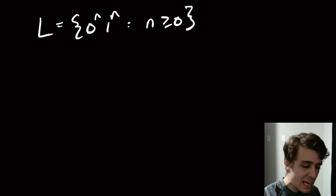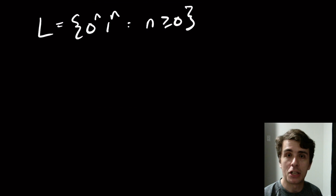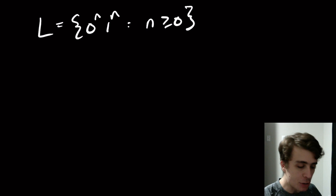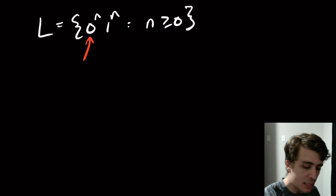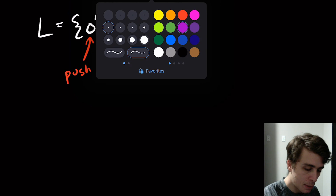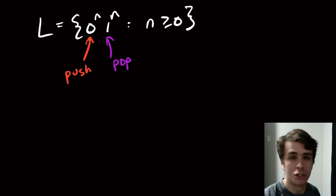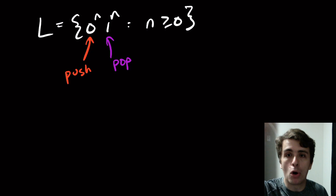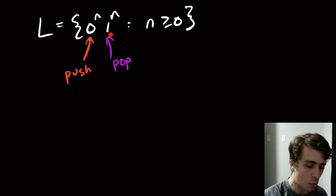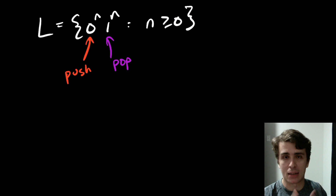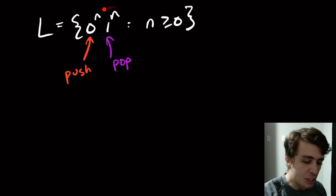The key here, and the way to make PDAs in general, is to think: what do I have to push, and how do I match them later? The key strategy is that because the number of zeros and ones has to match exactly, we push on the zeros and match the zeros with the ones. Every zero I see, I put something on the stack, and whenever I see a one I pop the same thing off the stack. We accept only if they match exactly.